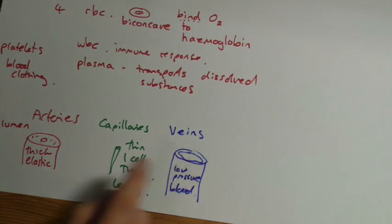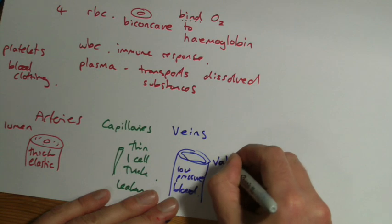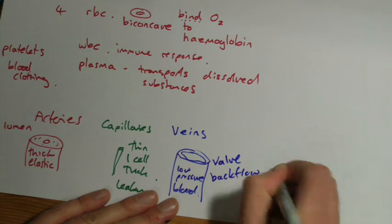And of course, the veins also have valves. Easy to remember - V for vein, V for valve. The role of a valve is to prevent blood flowing backwards, or what's known as backflow.